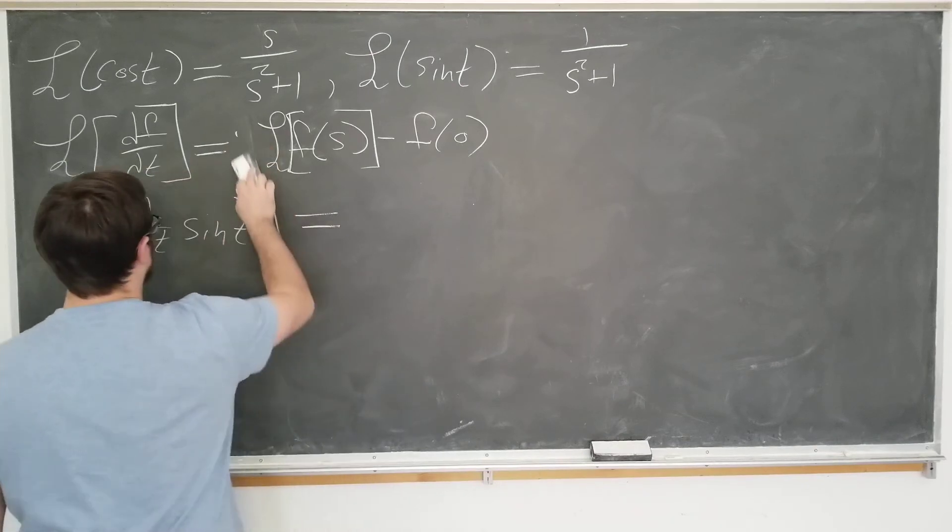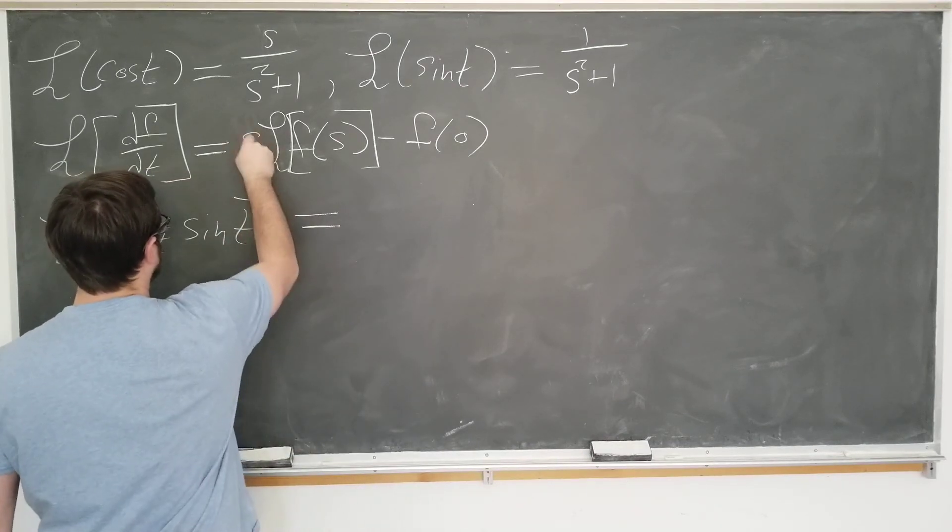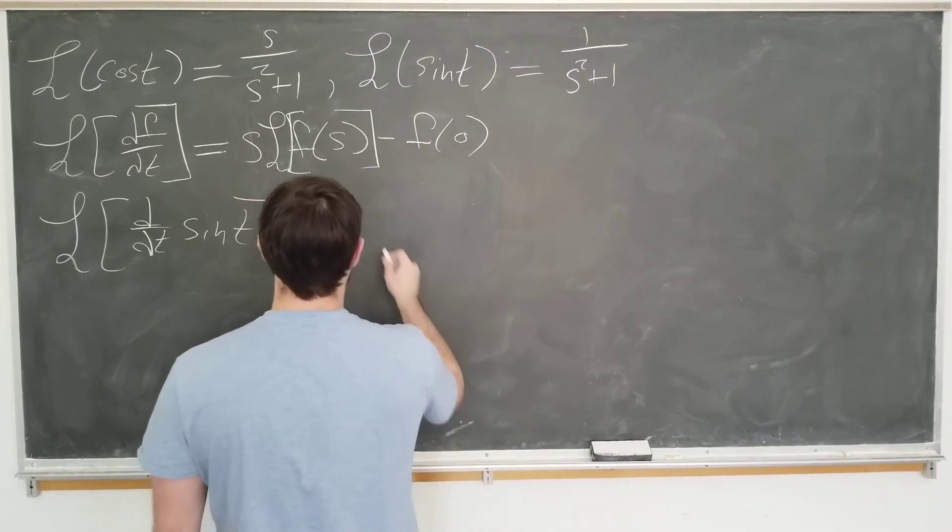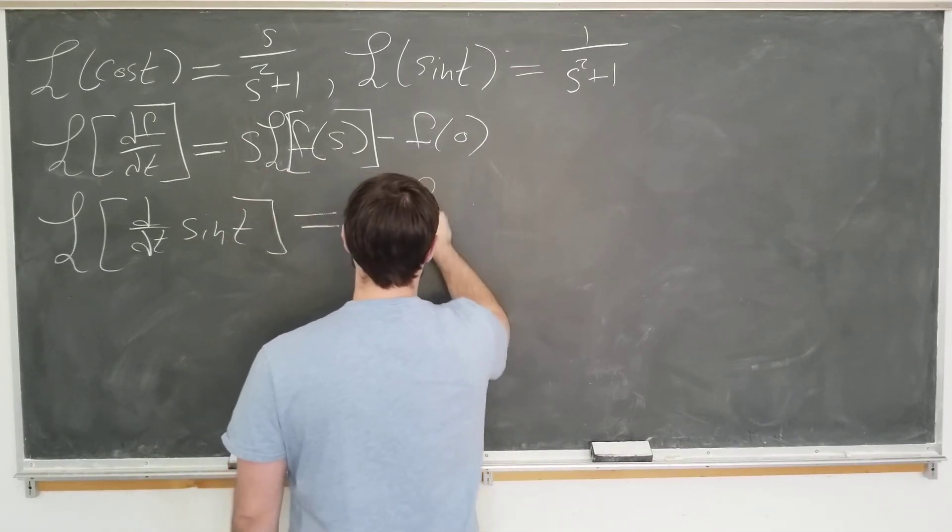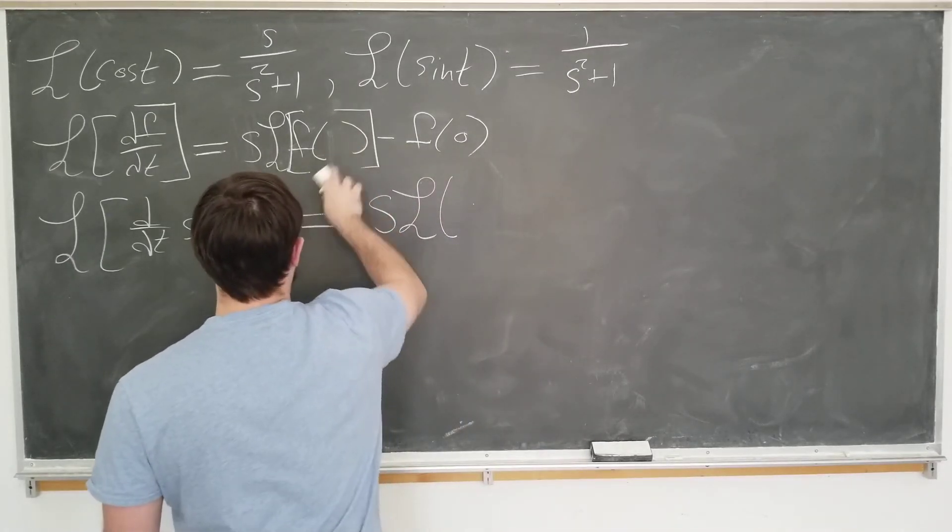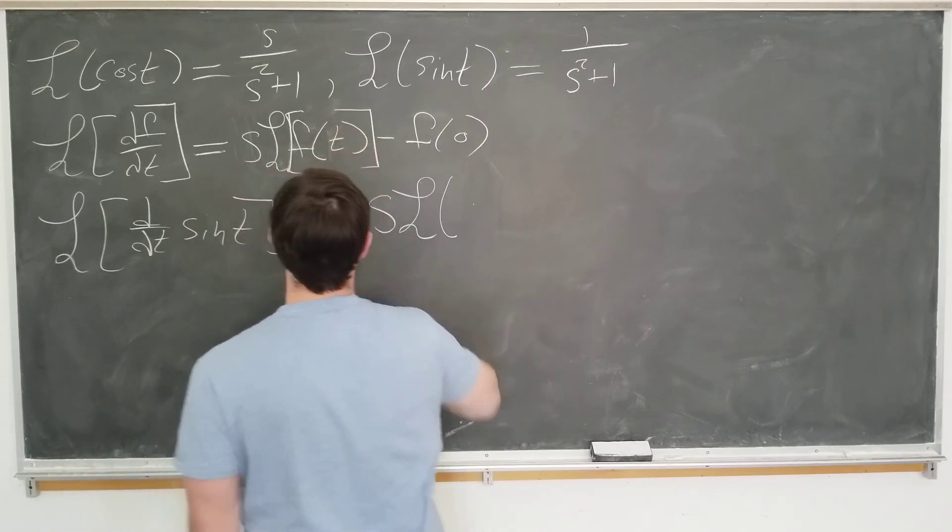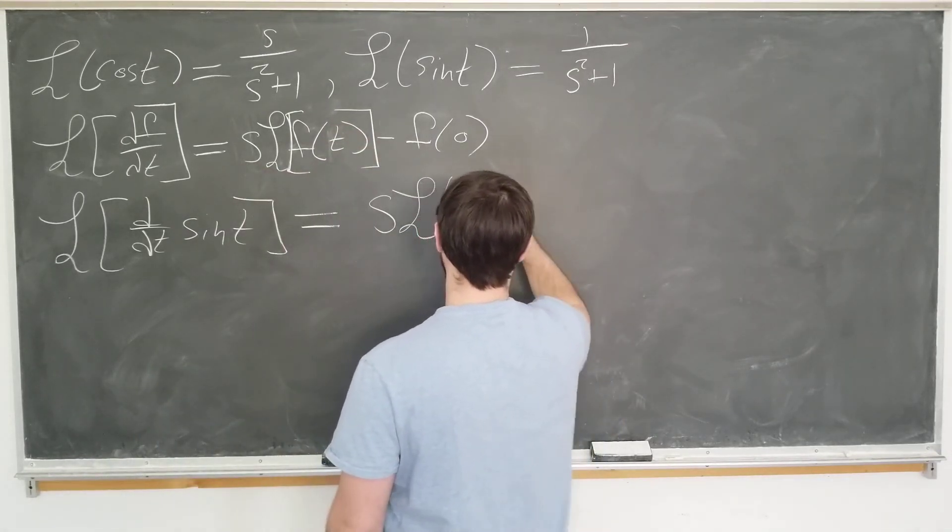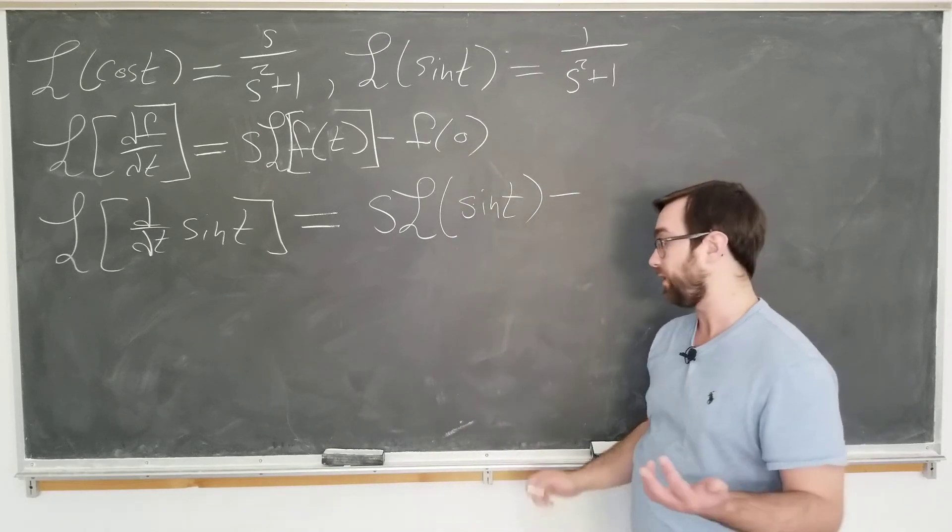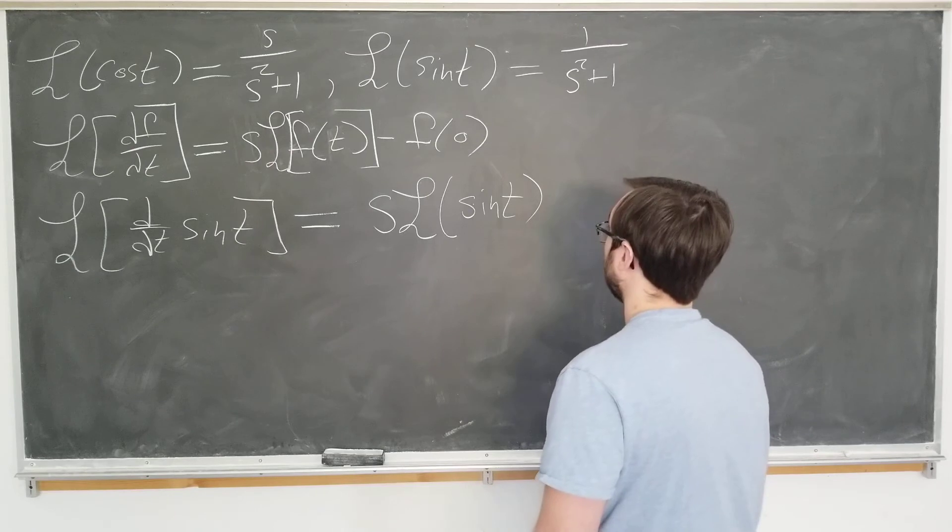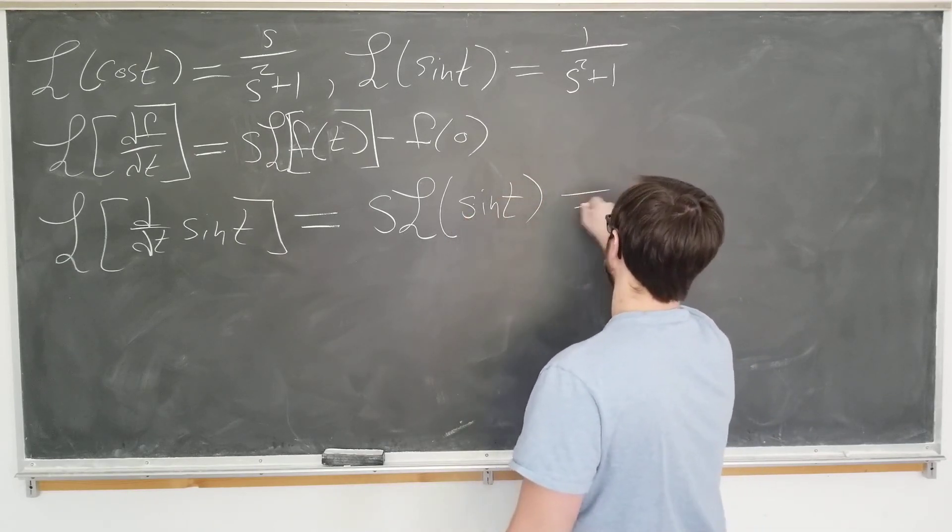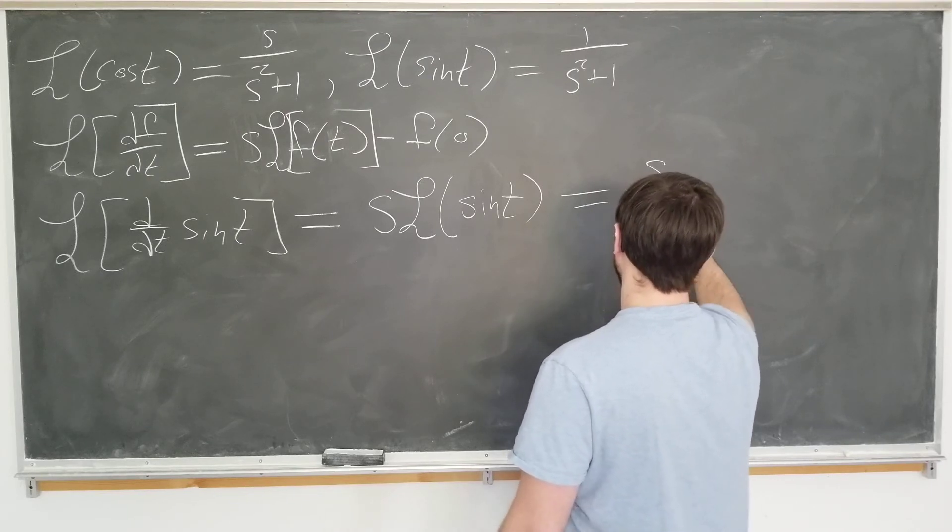And also, this s looks suspiciously like an integral. It's not. It's an s. This is now equal to s times the Laplace transform of sine t minus sine of 0, which is obviously 0, so minus nothing. And we have the Laplace transform of sine right up here, so this becomes s over s squared plus 1.